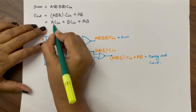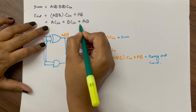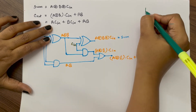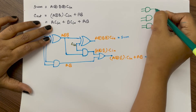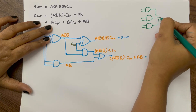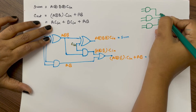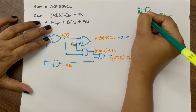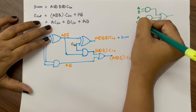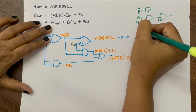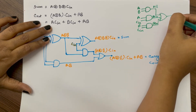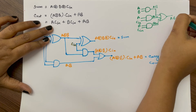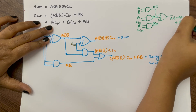We can also design C-out using another method: three separate AND gates with inputs A·B, A·C-in, and B·C-in, all feeding into one three-input OR gate. The output will be A·B + A·C-in + B·C-in, which is equivalent to the previous expression for carry out.